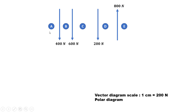Now we will use Bow's notation to draw the vector diagram. A, B, C, D, and E — these are known as Bow's notation. Let us see how to use this effectively to draw the vector diagram as well as the polar diagram.